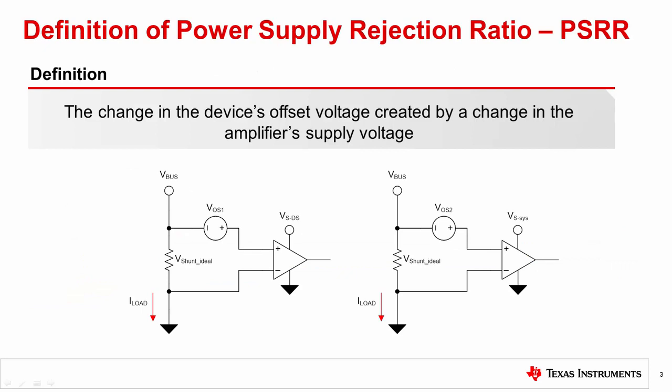Power Supply Rejection Ratio is a measure of the change in the device's Offset Voltage, VOS, induced by a change in the Amplifier Supply Voltage, VS, everything else kept the same. When the Amplifier Supply Voltage changes from VSDS — the test power supply voltage given in the Device Electrical Characteristics Table — to VSSys, the Power Supply Voltage in an applied system, its Input Offset Voltage changes from VOS1 to VOS2. This change is characterized by PSRR. The smaller the change in VOS, the better the PSRR spec.